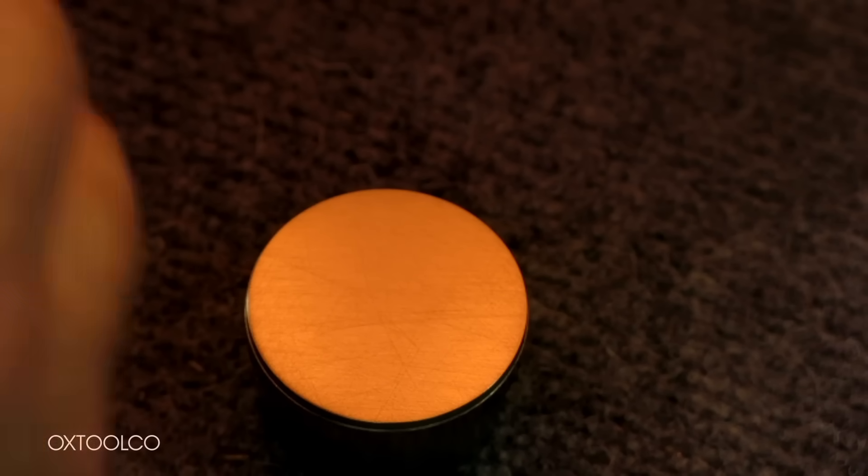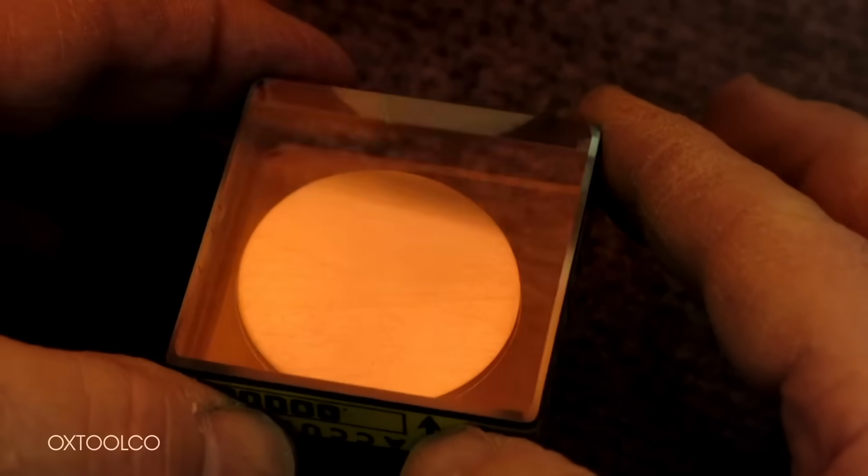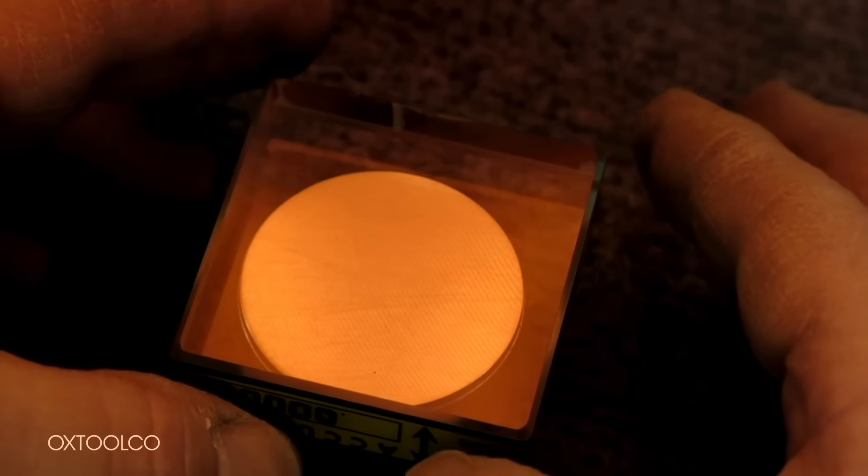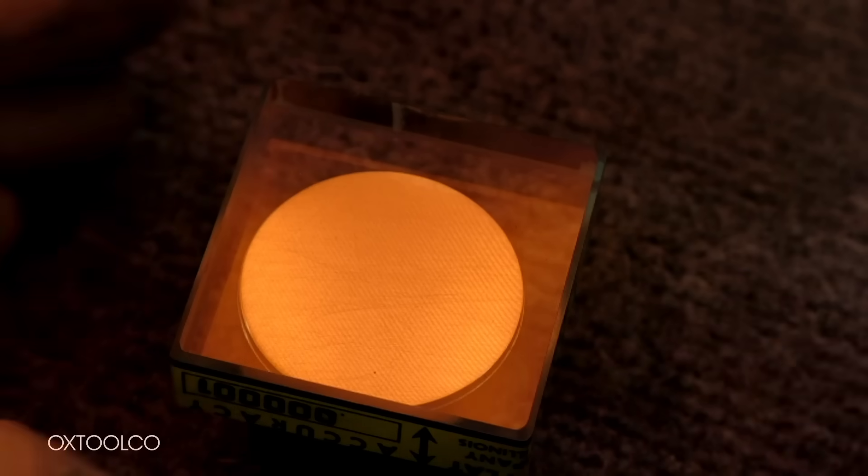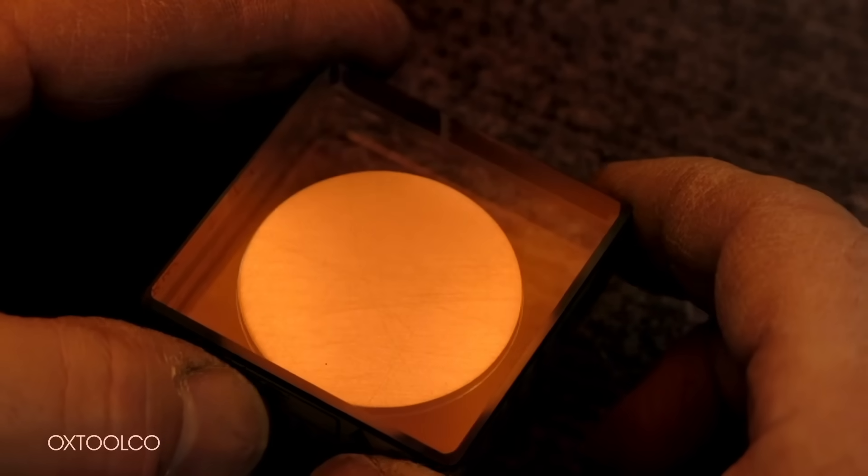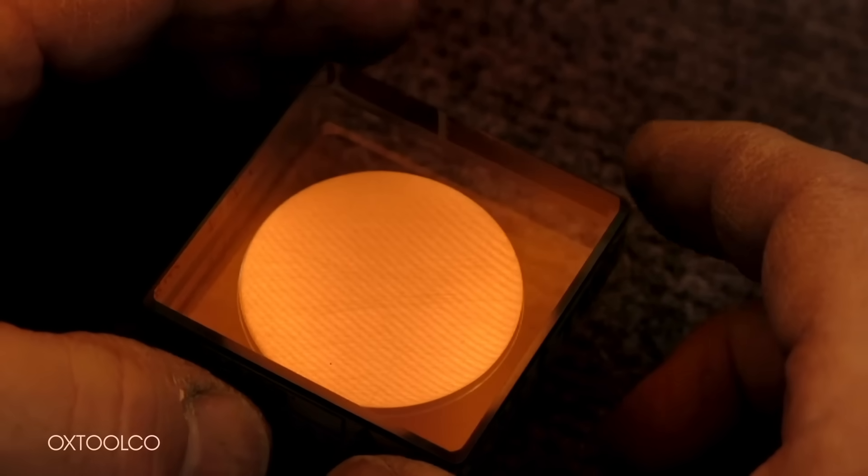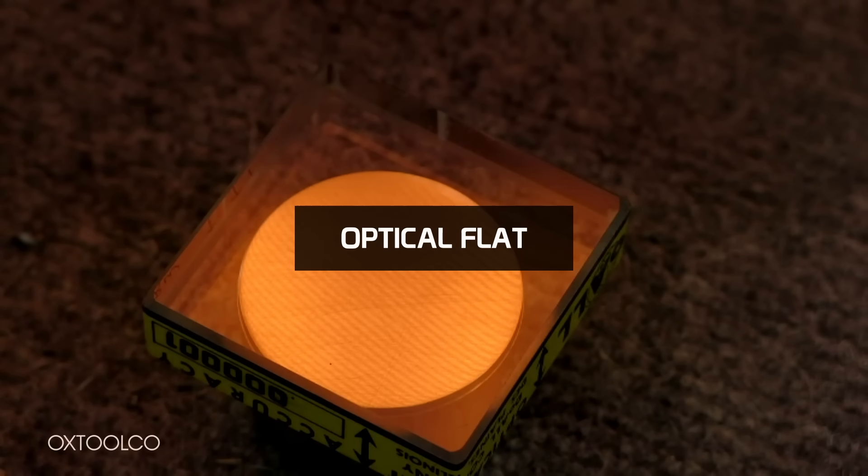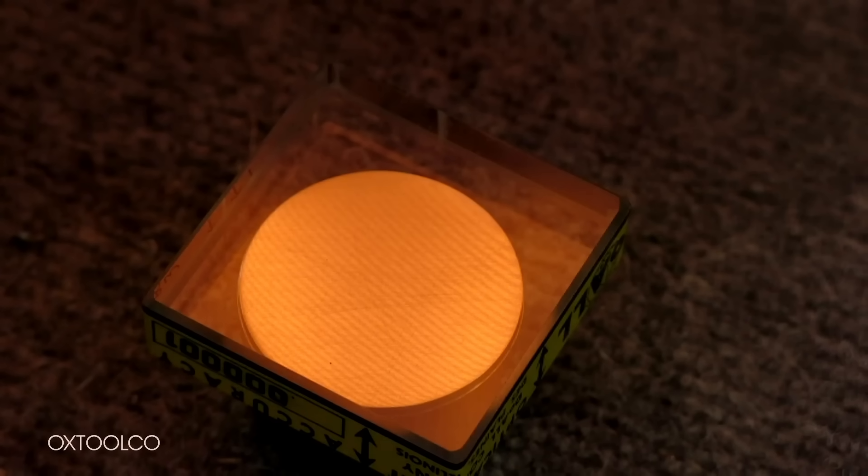Measuring the incredibly small surface variances at this level of flatness are near impossible to do with direct surface contact, so optical methods are used. In order to accomplish this, the interference pattern created by light reflecting off the surface to be measured is used. This is done by using a special, precisely polished, flat lens known as an optical flat and a monochromatic light source of a known wavelength. Common sources are low-pressure sodium lamps or a helium neon laser.